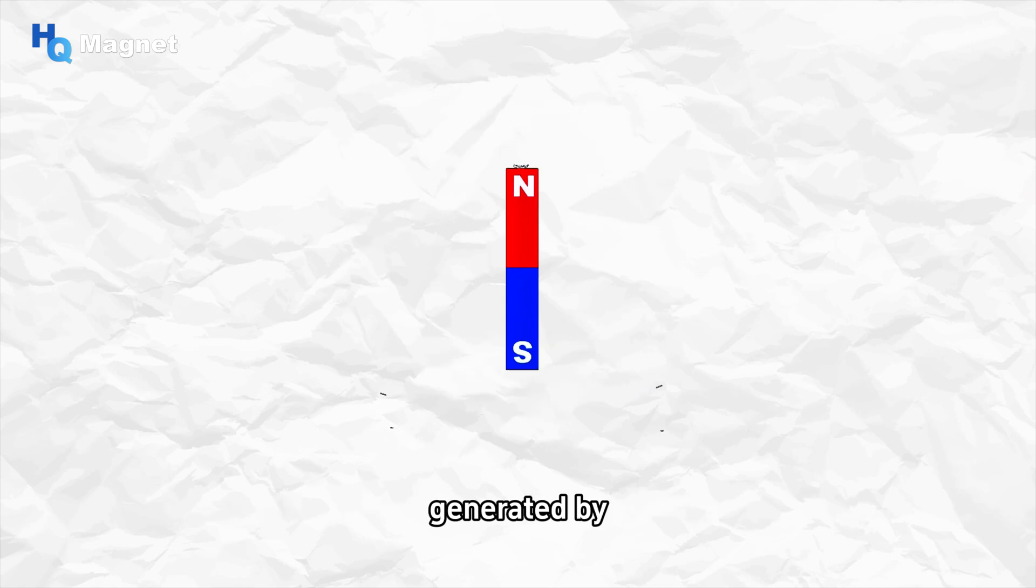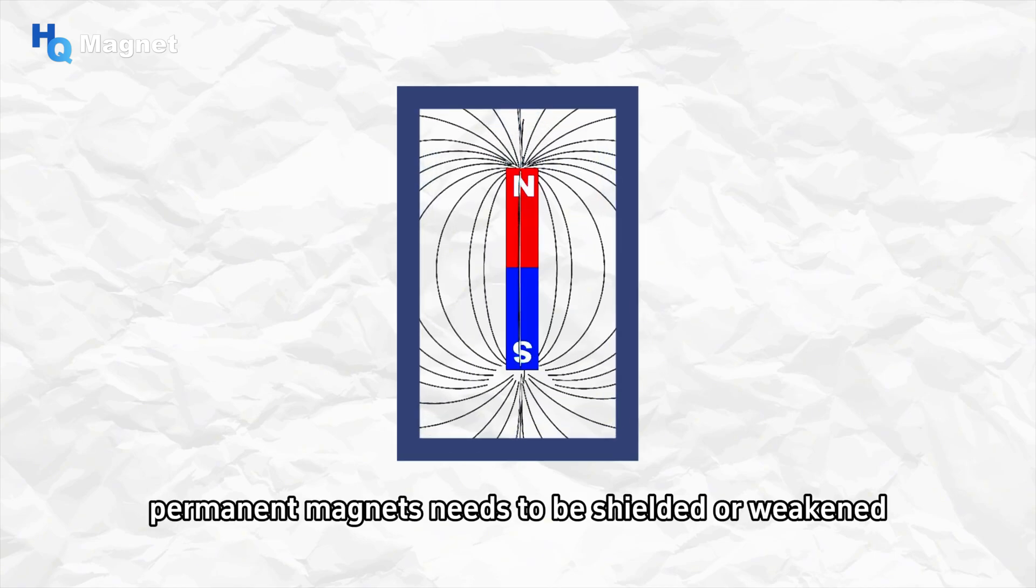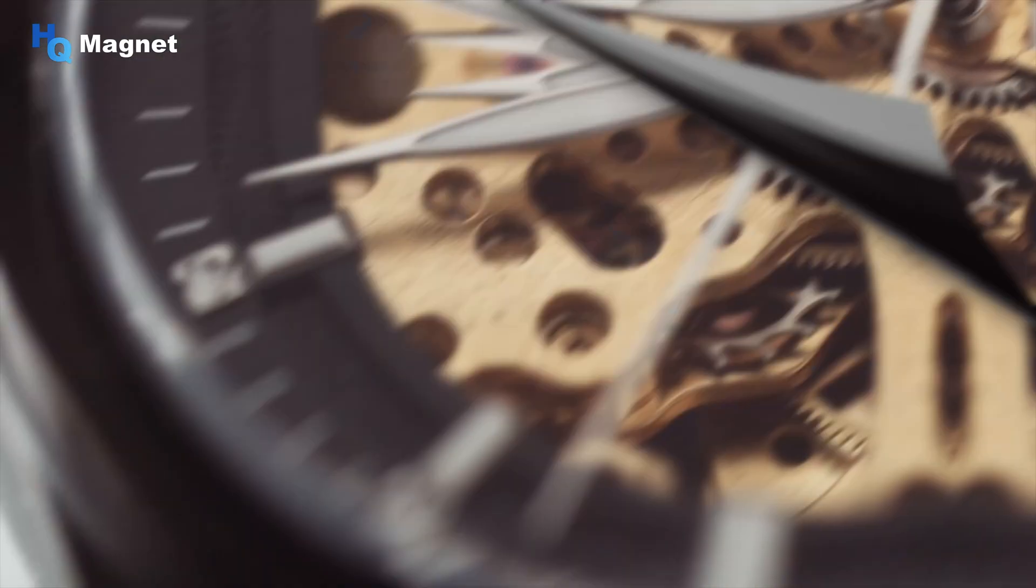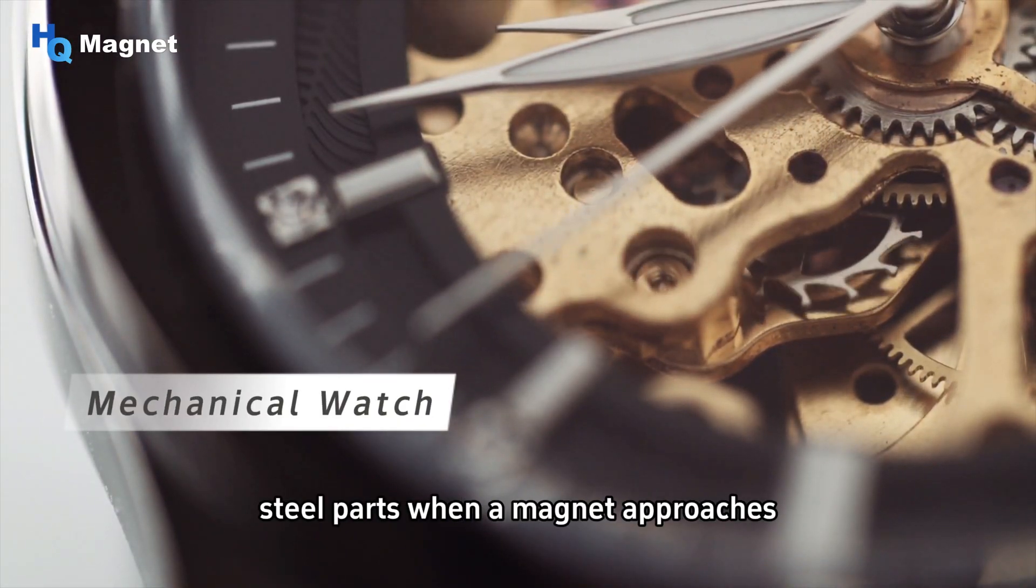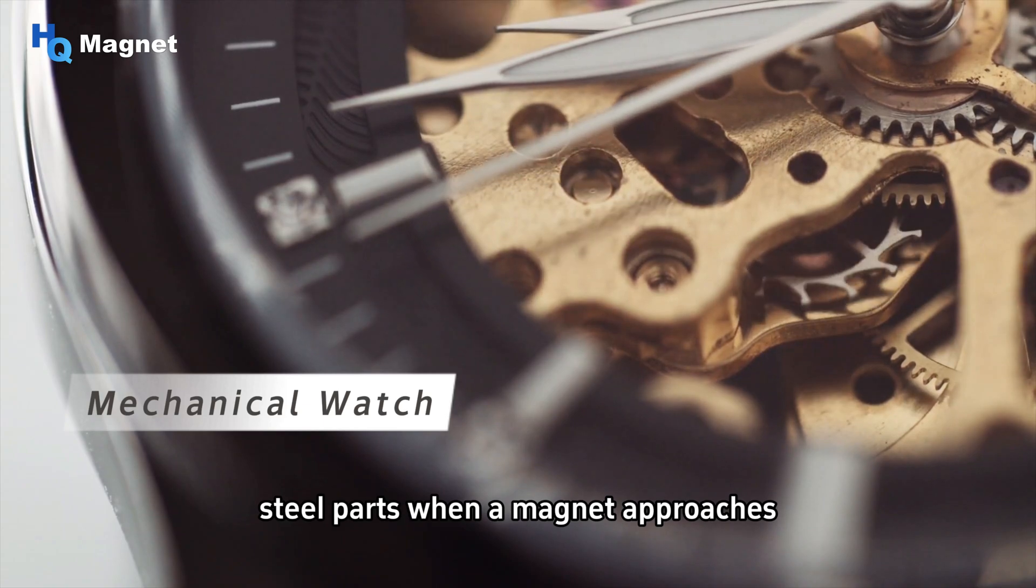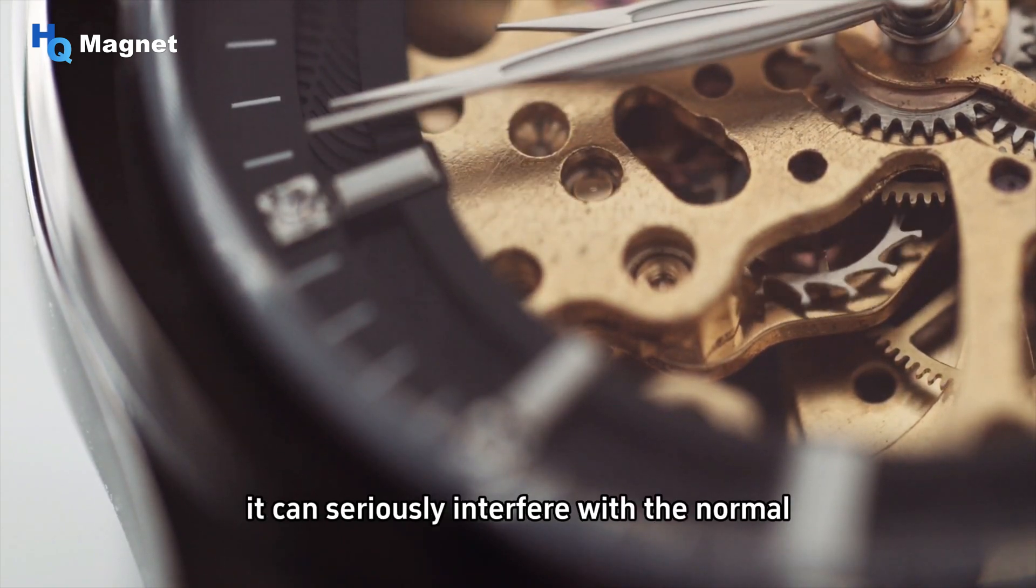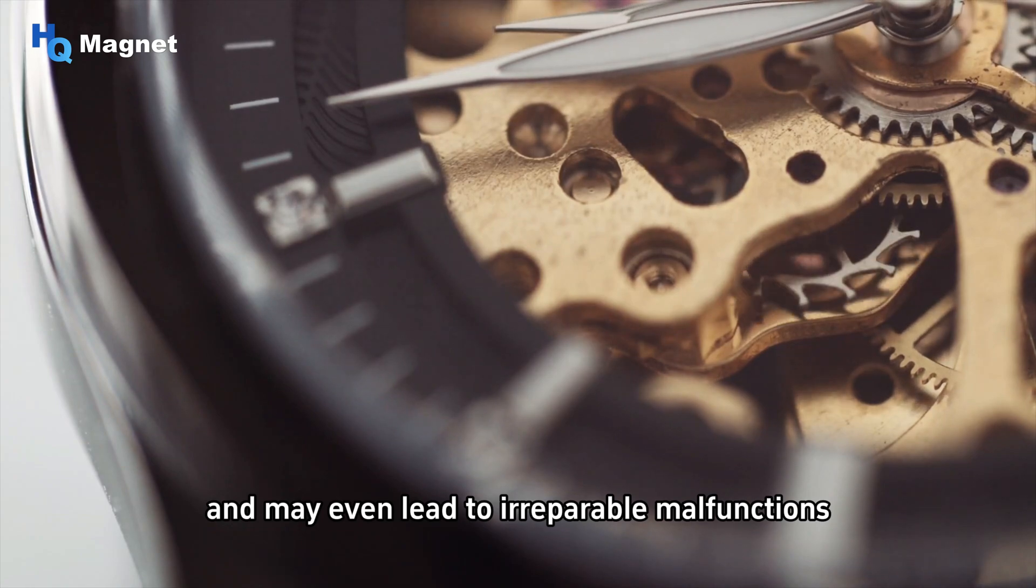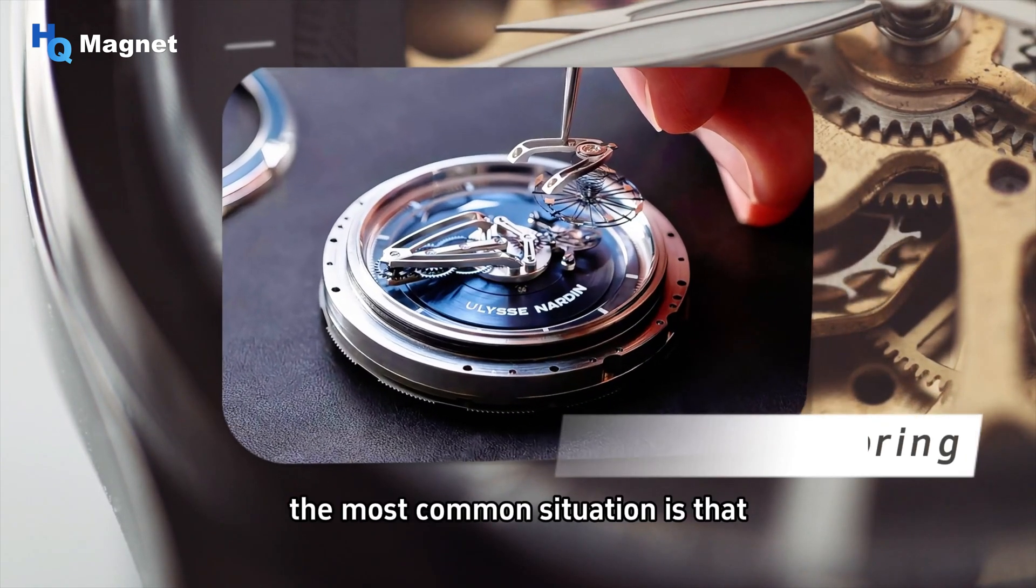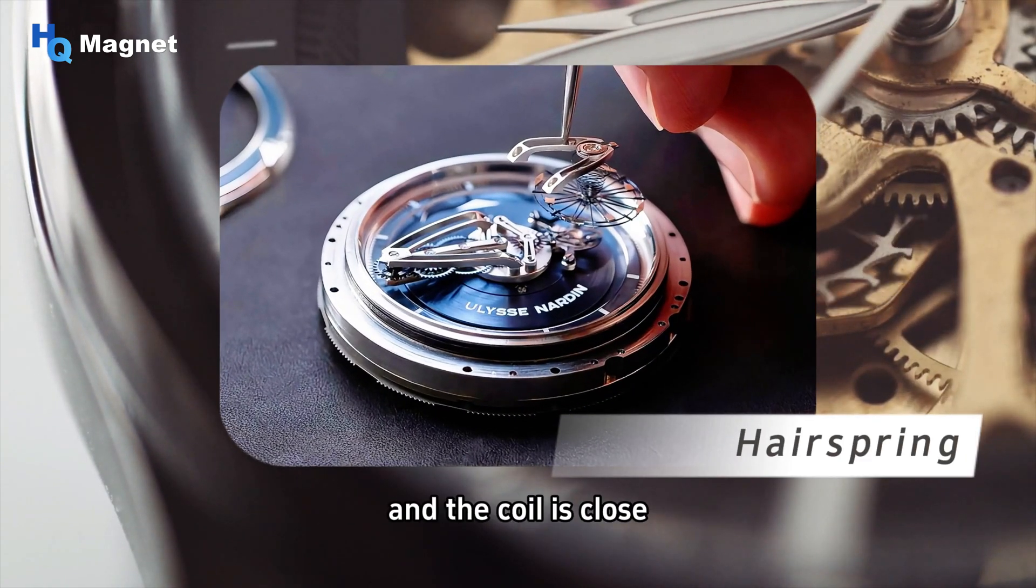However, there are certain scenarios where the magnetic field generated by permanent magnets needs to be shielded or weakened. For example, the interior of a mechanical watch contains many steel parts. When a magnet approaches, it can seriously interfere with the normal operation of the watch and may even lead to irreparable malfunctions.